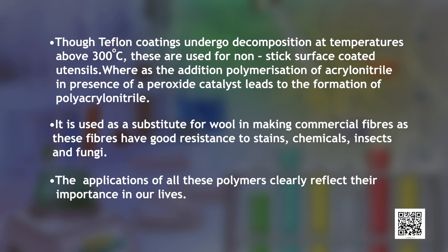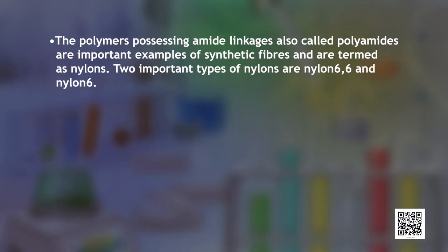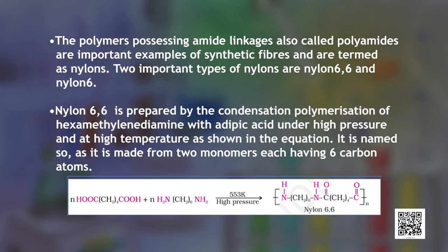The application of all these polymers clearly reflects their importance in our lives. We will also learn about the mode of preparation and uses of some condensation polymers that are characterized by their linking units. Polymers possessing amide linkages are called polyamides, and are important examples of synthetic fibers termed as nylons. Two important types of nylons are nylon-66 and nylon-6.